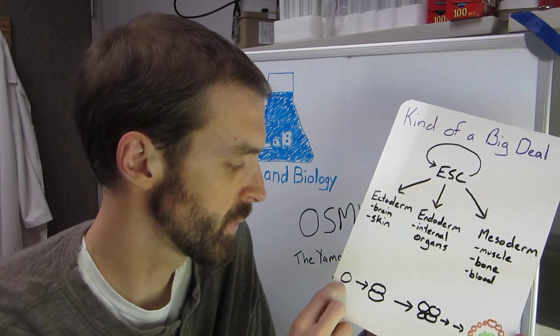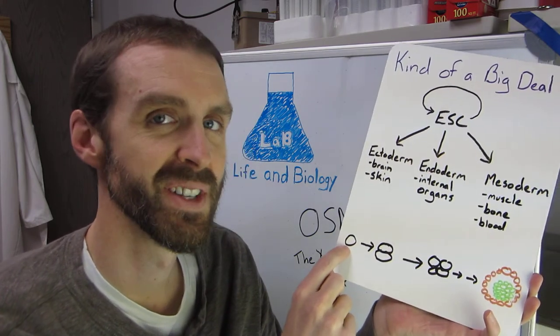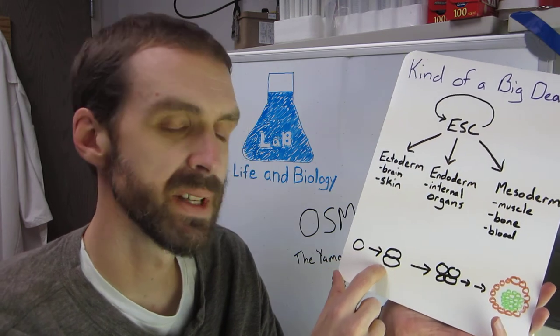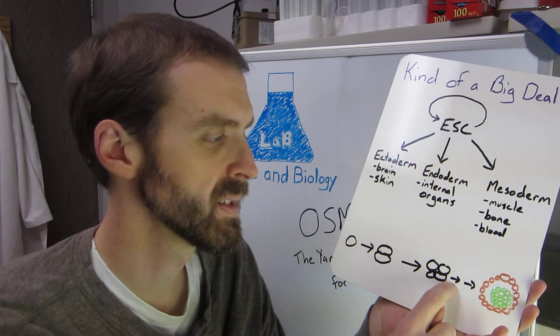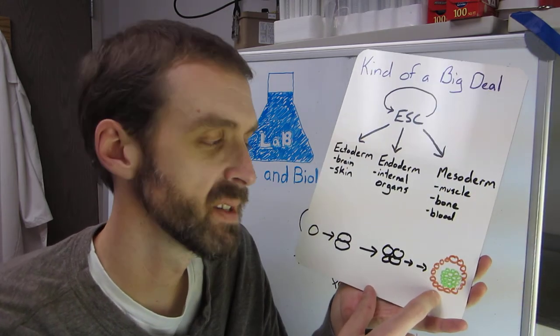If you start off with a fertilized egg, which I've shown here as a nice circle, so here's your egg, it'll divide into two cells. And those two cells will divide into four cells. And then this goes on for a while, and then you end up with something called a blastocyst.